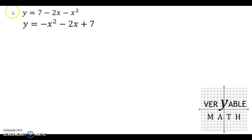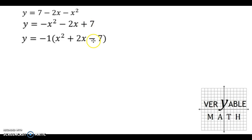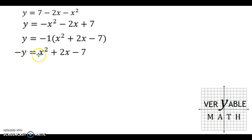Now you can see the a value is negative 1. In order to get rid of the negative 1 as the a value, I'm going to divide everything on both sides by negative 1. I've factored out this negative 1 from every single term, and all the terms have changed their signs. Dividing both sides by negative 1, y divided by negative 1 simply becomes negative y. The advantage is that we now have x squared with a positive 1 a value, so we can start the completing the square method. The disadvantage is that our y is negative and we'll have to turn it back to positive before we're done.